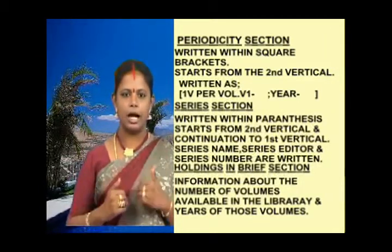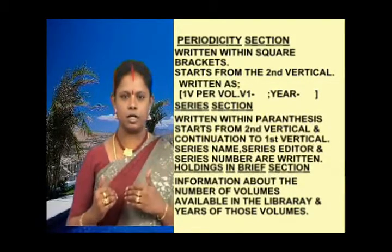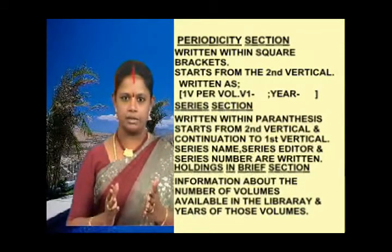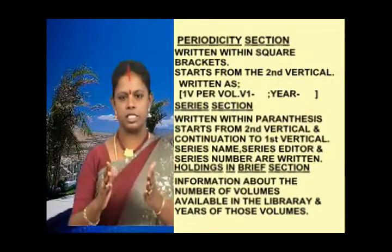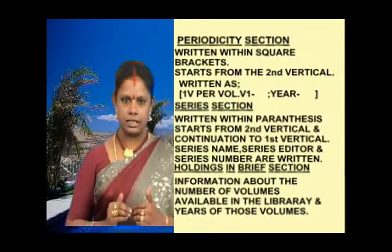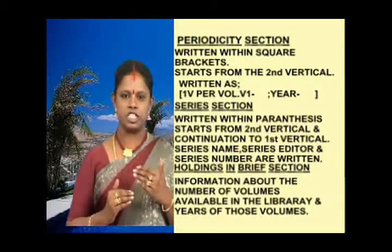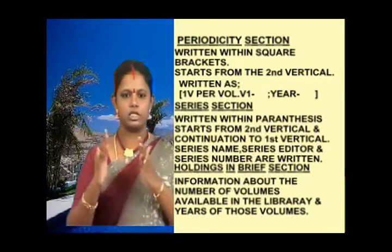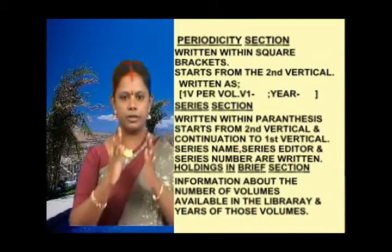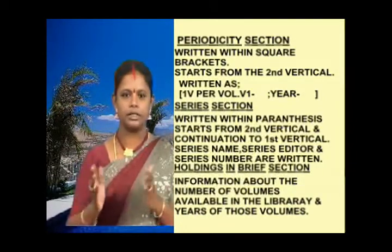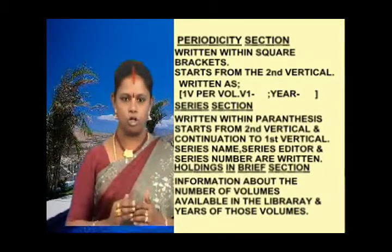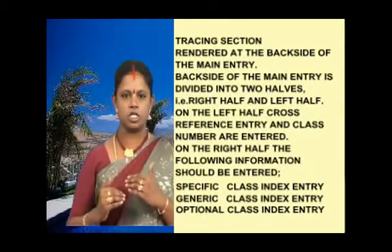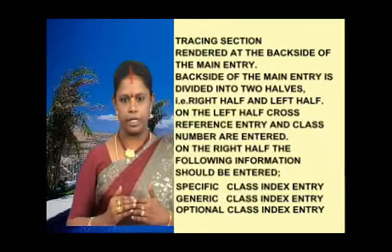Then comes the periodicity section, always written within square brackets. Within the square brackets we write: one volume per year, dot, V1 hyphen, some space, semicolon, and year of commencement hyphen, leave some space, close the square bracket. The series or notes section is just like book material, written within parenthesis with the series name, series editor, and number. The holding in brief section gives information about the number of volumes available in the library and the years for those volumes. The tracing section is written on the back side of the main entry card.